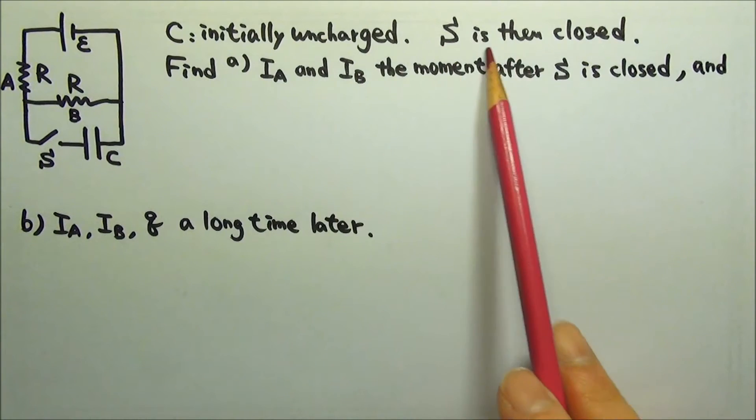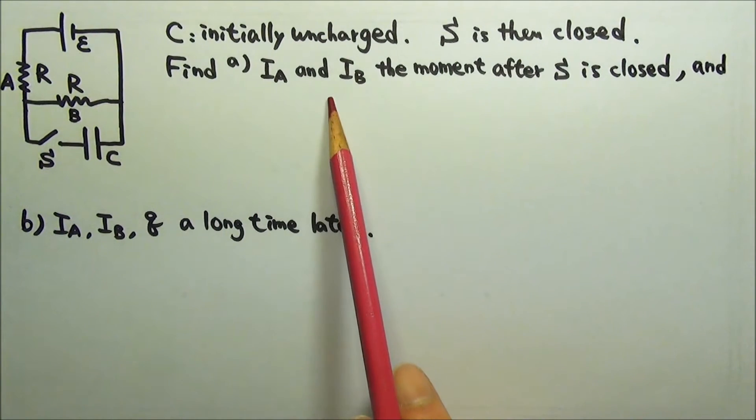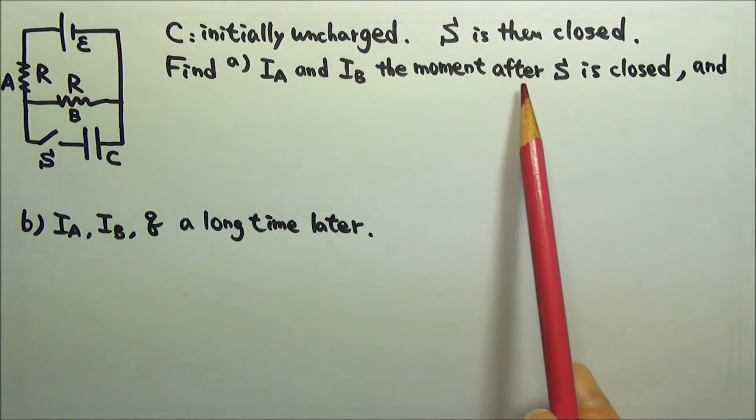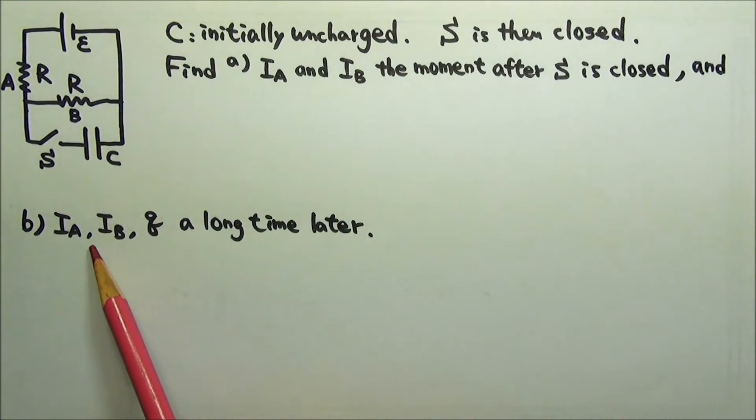The switch is then closed. Find A, the current in each resistor the moment after the switch is closed. And B, the current in each resistor and the charge on the capacitor a long time later.